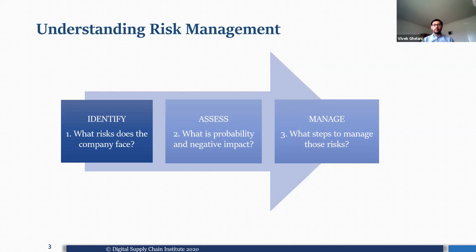First, let me get back to the basic process of understanding risk management. It divides into three steps: identify, assess, and manage. Supply chain leaders — and if you are studying supply chain right now — should think about what risks you will face in a function or at a company, then assess the probability of those risks happening and their negative impacts in terms of loss of revenue or loss of a customer. Once you assess that, the next step is to manage it and put controls in place to make sure it doesn't happen again, or if it does, it has a lower impact on your business.